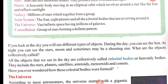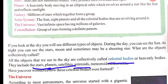What are these objects collectively called? Yeh jo bhi cheezein hain — sun, moon, stars aur shooting star — yeh kya kehlaati hain? These are called celestial bodies. All the objects that we see in the sky are collectively called celestial bodies, aakashiya pind, and heavenly bodies. They include: the stars (taare), planets (grah), satellites (upagrah), asteroids (shudr grah), and more.